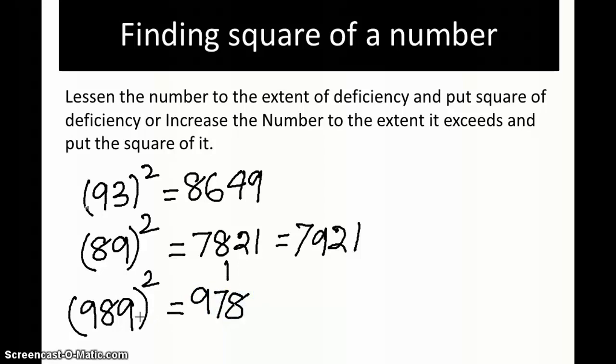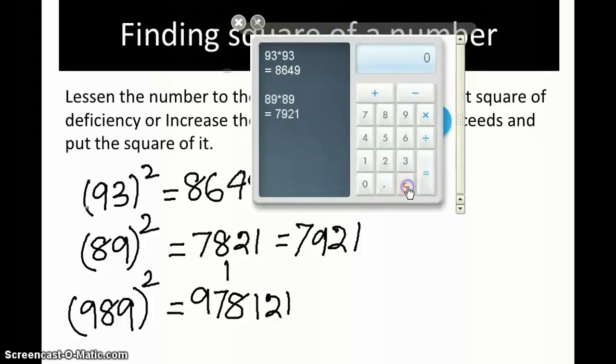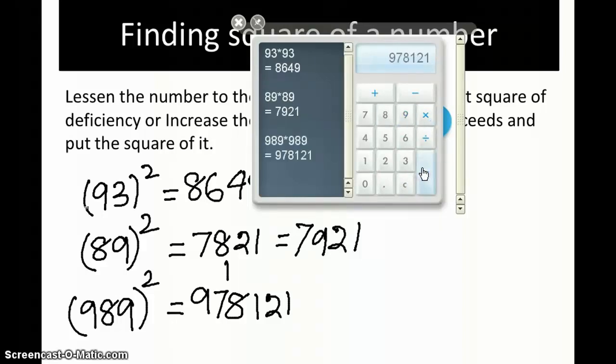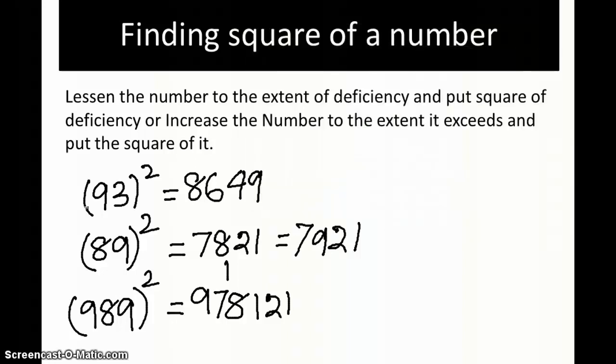Then put the square of the deficiency, 11 squared, which is 121. In this case I'll put 121 because our base is 1000, so we can keep three numbers here. The answer is 978121. Let's check: 989 times 989 equals 978121. You can imagine that with a single line we are able to write the answer.